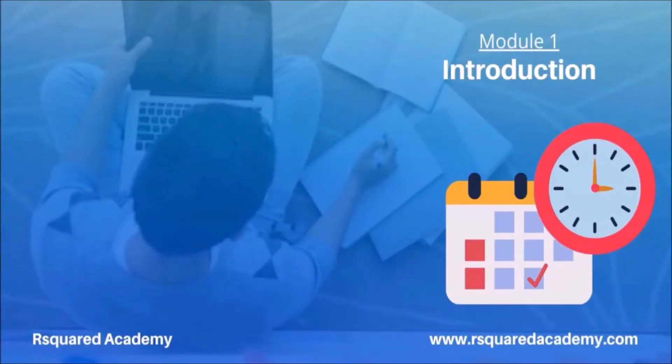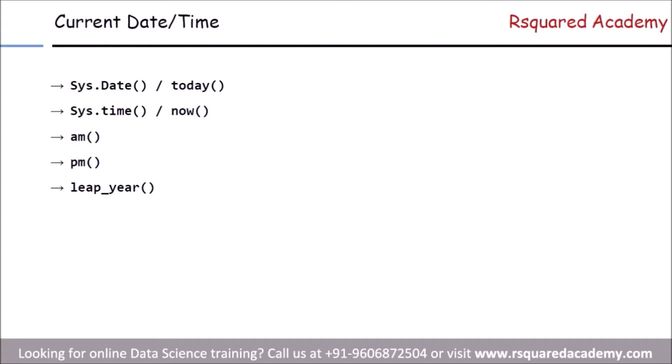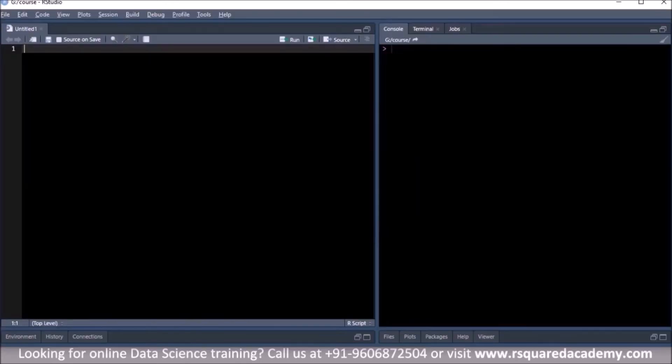Good luck as you get started and we look forward to seeing you in the discussion forums. In the first module we'll keep things simple and learn how to get the current date and time, how to check whether the time is AM or PM, and since 2020 is a leap year, we'll also learn how to check whether a given year is a leap year. We look at functions from both base R and the lubridate package, and let's get started by loading the packages.